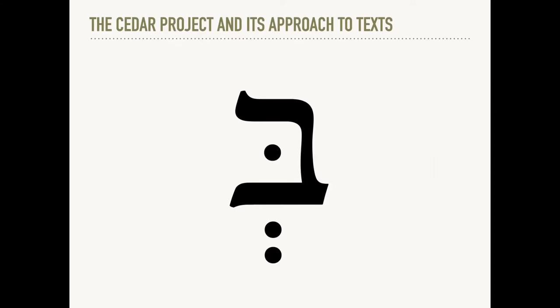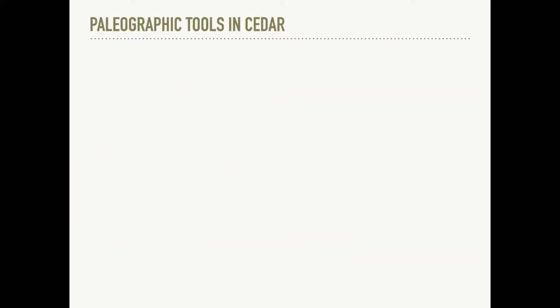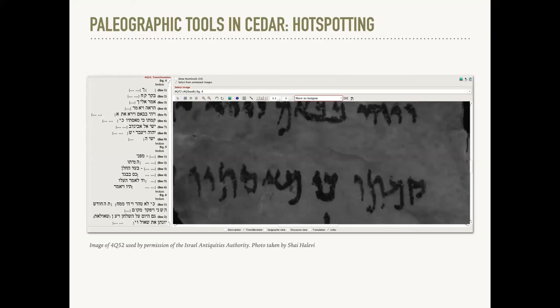Second, texts in CEDAR are highly atomized. For example, this is the first character in the Masoretic text of Genesis 1 — a bet with a dagesh and a schwa. In OCHER, the bet, the dagesh, and the schwa are each separate database items with their own unique identification numbers, nested in the epigraphic hierarchy under a combining sign. This degree of atomization makes it possible to compare manuscripts in great detail and with great flexibility, which brings me to the main topic of today's presentation: CEDAR's Tools for Paleographic Analysis and Reconstruction.